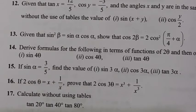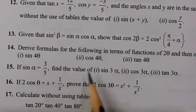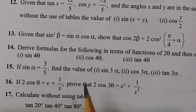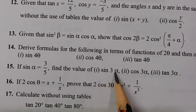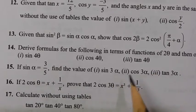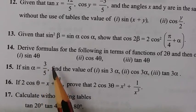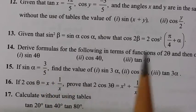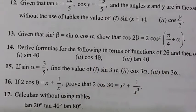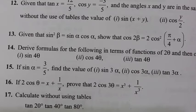Question number 15: If sin α equals 3 upon 5, find the values of sin 3α, cos 3α, and tan 3α. We will use the formulas: sin 3θ equals 3 sin θ − 4 sin³θ, cos 3θ equals 4 cos³θ − 3 cos θ, and tan 3θ equals (3 tan θ − tan³θ) upon (1 − 3 tan²θ). We first make a triangle with sin α equals 3/5, meaning perpendicular equals 3 and hypotenuse equals 5.